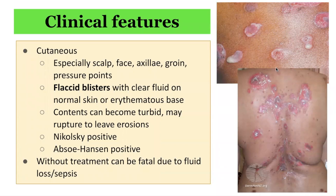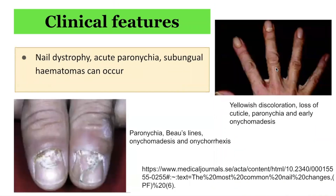Associated pruritus is uncommon. The lesions demonstrate a Nikolsky positive sign as well as Asboe-Hansen positive sign. Without treatment, this condition can be fatal due to fluid loss and sepsis. The areas predominantly affected include the scalp, face, axilla, groin, and pressure points. There have also been reports of nail involvement, including nail dystrophy, acute paronychia, and subungual hematomas.